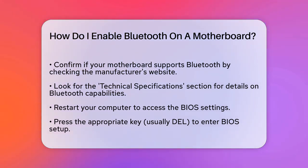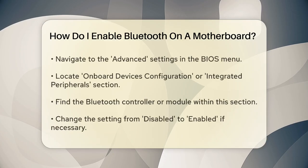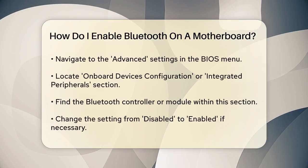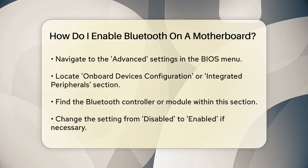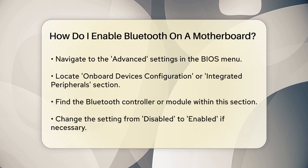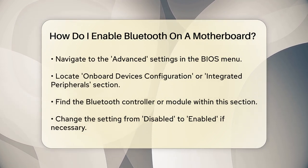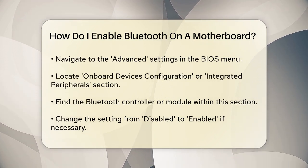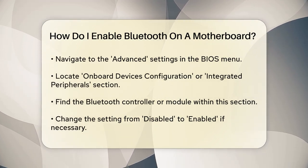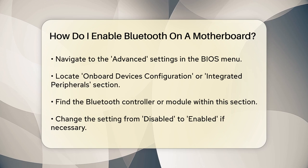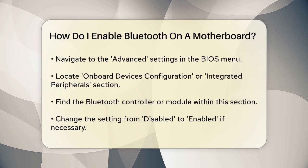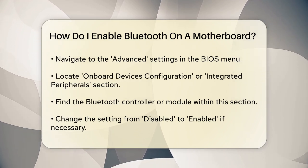Once you've confirmed that your motherboard has Bluetooth capabilities, the next step is to enter the BIOS settings. To do this, restart your computer and press the key that takes you into the BIOS setup — usually the DEL key, but it can vary depending on your motherboard model.